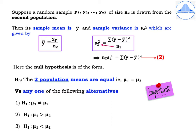The null hypothesis is H0: the two population means are equal, that is μ1 = μ2, versus any one of the following alternatives. H1: μ1 ≠ μ2 is a two-tailed alternative; H1: μ1 > μ2 is a right-tailed alternative; and H1: μ1 < μ2 is a left-tailed alternative. The null and alternative hypotheses are exactly the same as what we learned under large sample tests for equality of means.